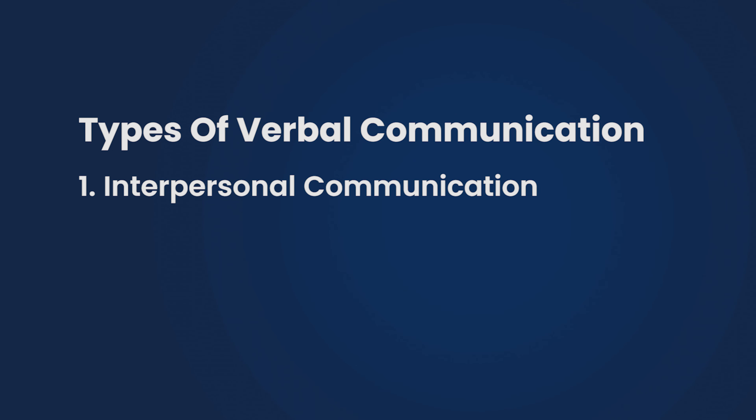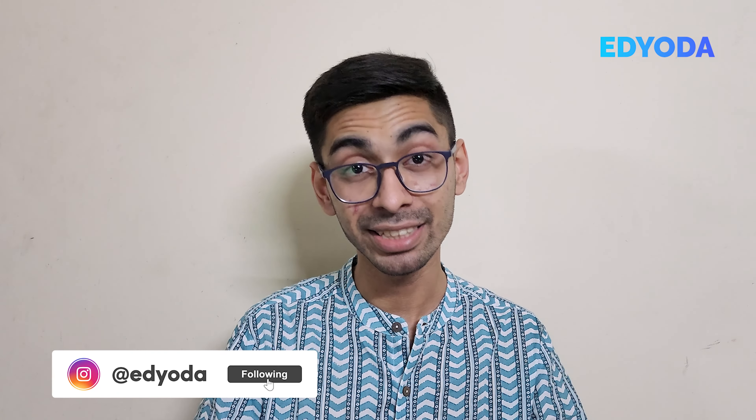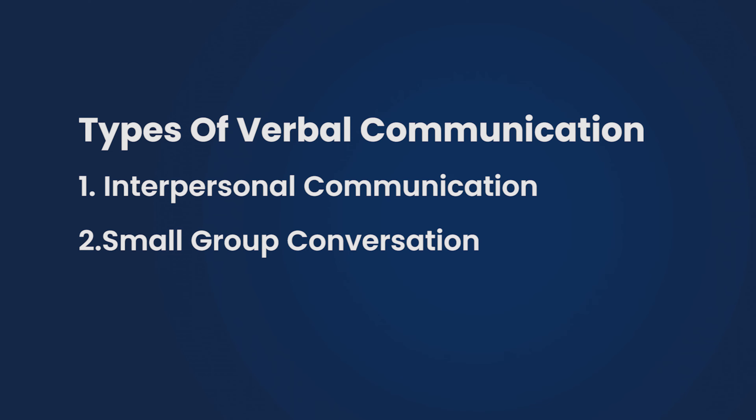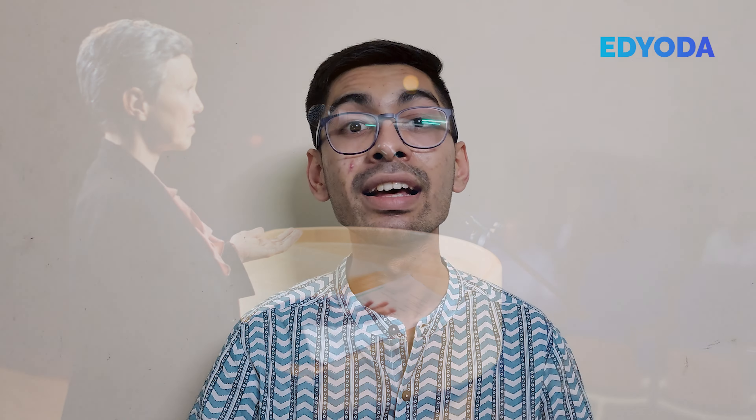Now verbal communication can be further divided into three types. First is interpersonal communication, which is one-to-one communication — two people speaking and both are talking. Second is small group communication, where there are two or three people and everyone has a chance to speak. Third is public communication, where there's a large audience and you are speaking while the audience is only listening — a one-way communication.